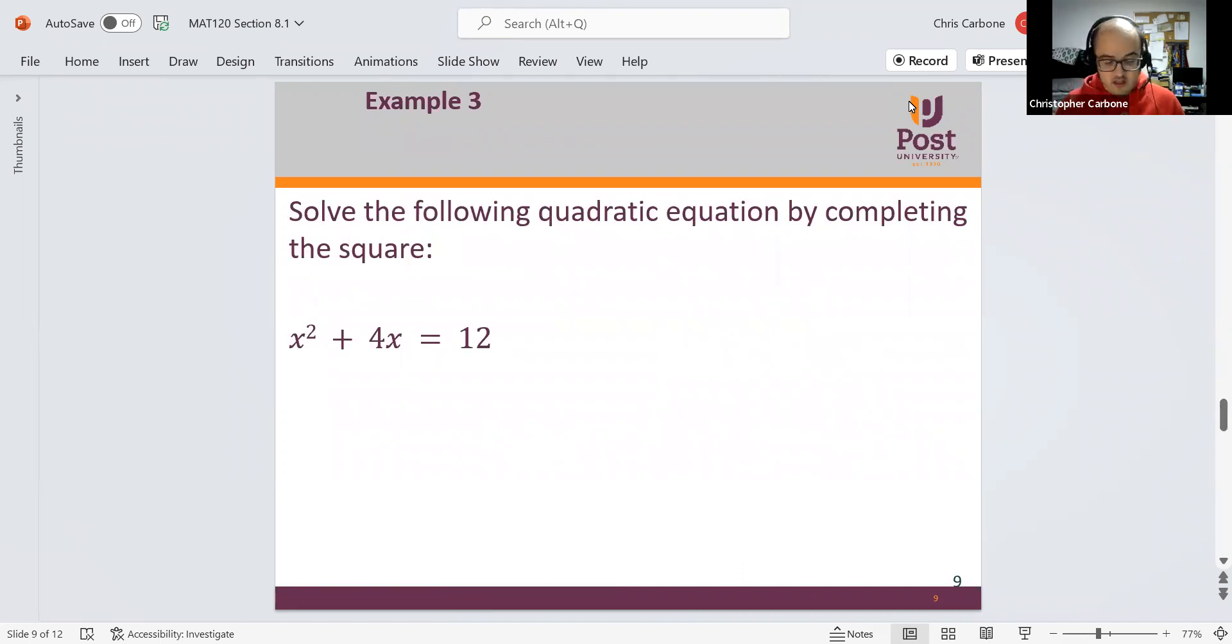So now we want to solve this equation by completing the square. x squared plus 4x equals 12. So 4 divided by 2, which makes 2. We would square that, get 4. We're going to add 4 to both sides of this equation. So this would be x squared plus 4x plus 4 equals 16.